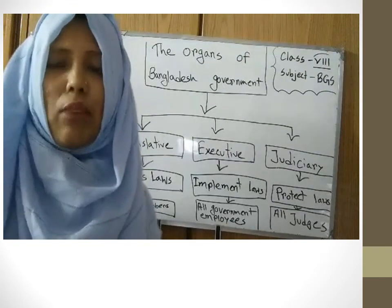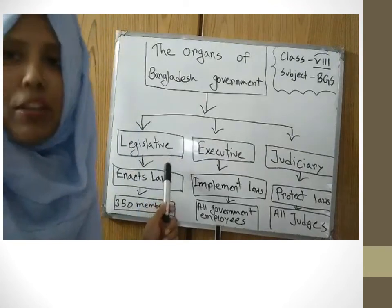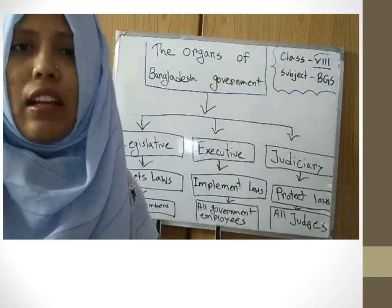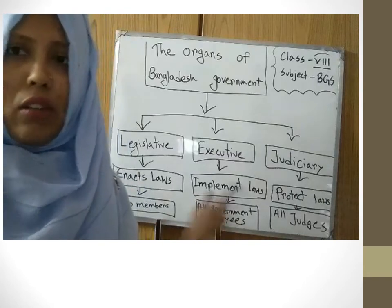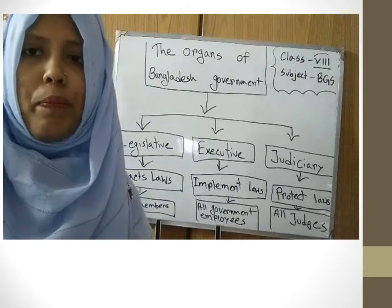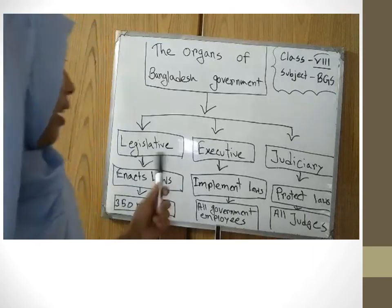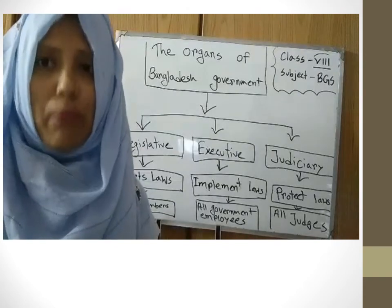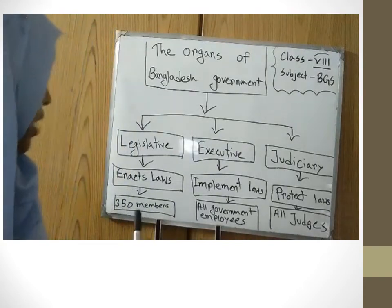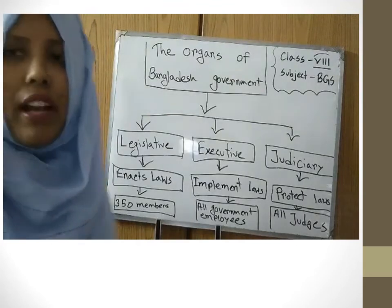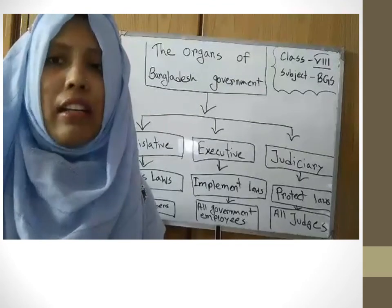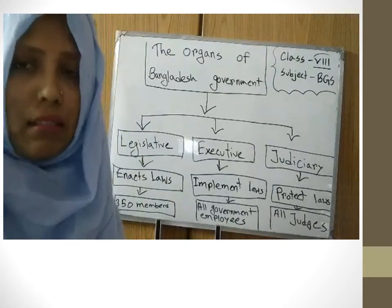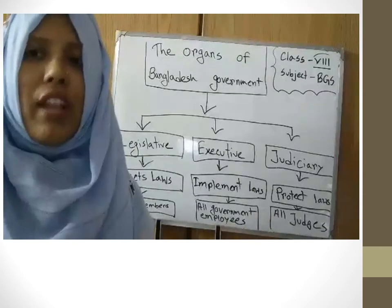The legislature of Bangladesh is unicameral, meaning it has one chamber and no provinces — it conducts its work from the central government. Our legislature is named Jatiyo Sangsad. Our Jatiyo Sangsad has 350 members: 300 members are elected by the direct vote of the general people, and the remaining 50 members are selected by those 300 elected members.